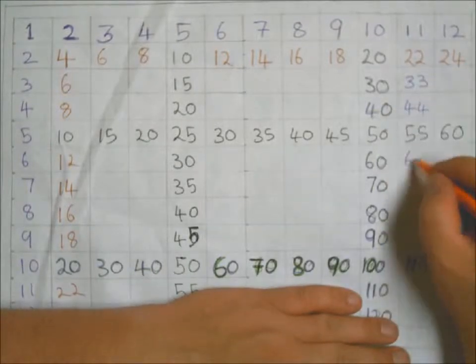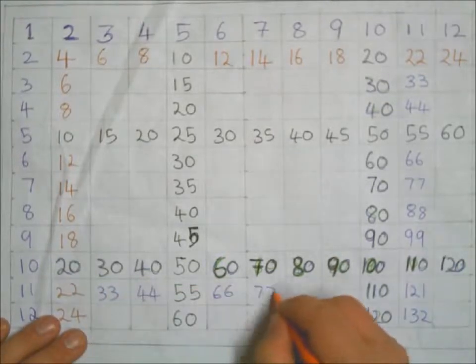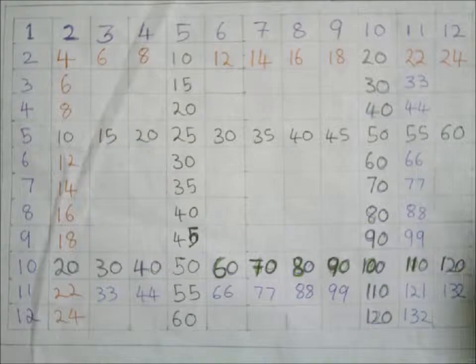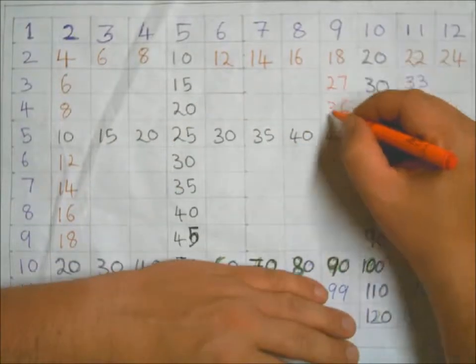11 times table - really nice one: 11, 22, 33, 44, 55, 66, 77, and so on. Be careful of the ones that are towards the end there.